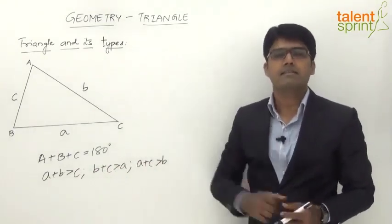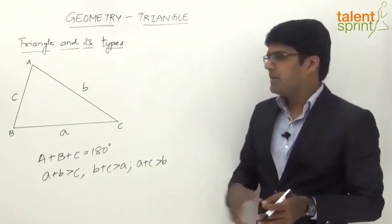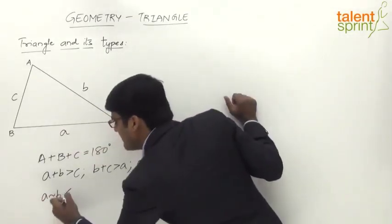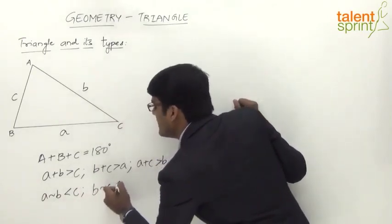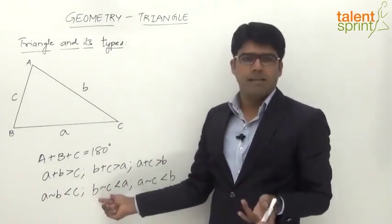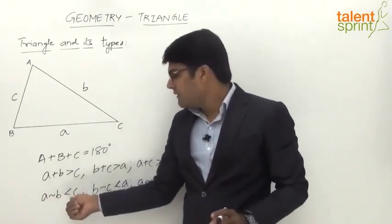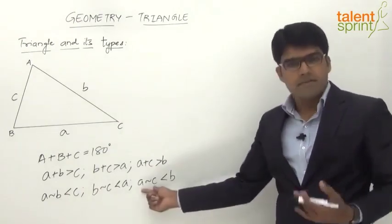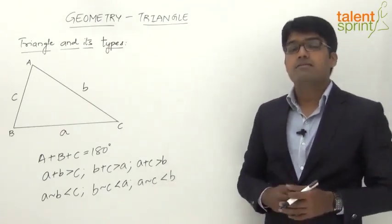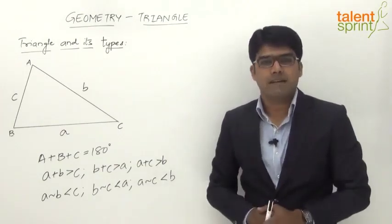Similarly, the difference of any two sides is always lesser than the third side. So we can say: the difference of A and B will be less than C, the difference of B and C will be less than A, and the difference of A and C will be less than B. Whether it is B minus C or C minus B, the positive value of that difference will be lesser than the third side.